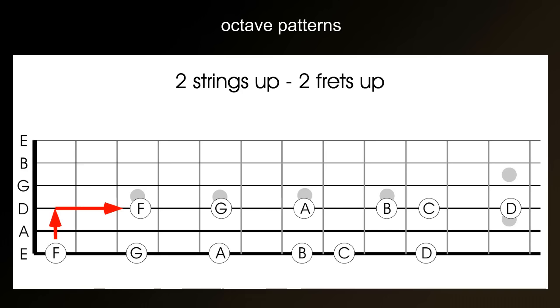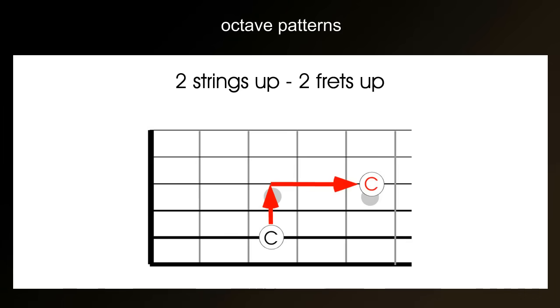Two strings up, two frets up will always produce the octave up. And when this is applied, it means now you know nearly all the notes on the D string without having to memorise them. And because this rule applies to the A string, you know nearly all the notes on the G string.